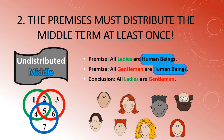Using the Venn diagram: 'All ladies are human beings' blocks sections one and two; 'All gentlemen are human beings' blocks sections two and three. Does it follow that all ladies are gentlemen? No — section four still exists, showing there's a place for ladies who are not gentlemen. In fact, that's probably a very populated section four.